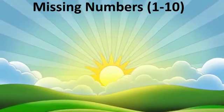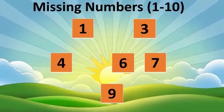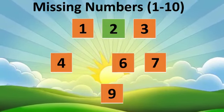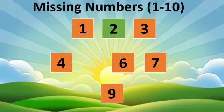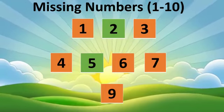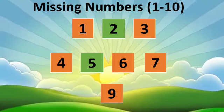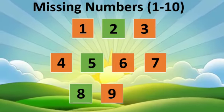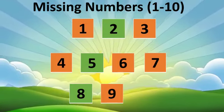Now let's write the missing numbers. Which number comes after one? Think and write — number two. Which number comes after three and four? Number five. Which number comes after six and seven? Very good — number eight. Which number comes after nine? Number ten.